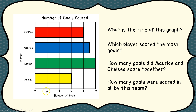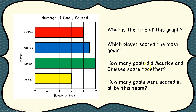Now this scale, if you notice, counts by two: 2, 4, 6, 8, 10. How many goals did Maurice and Chelsea score together? Chelsea scored 8 — her bar goes right to that line. Maurice scored 2, 4, 6, 8, and then his bar goes halfway between 8 and 10, which means he scored 9. So 8 plus 9 gives Maurice and Chelsea 17 goals between the two of them.